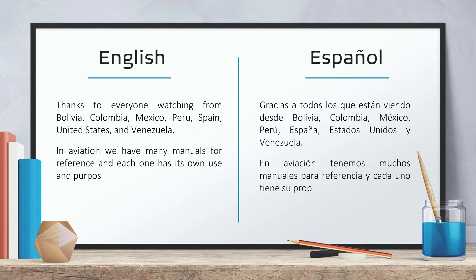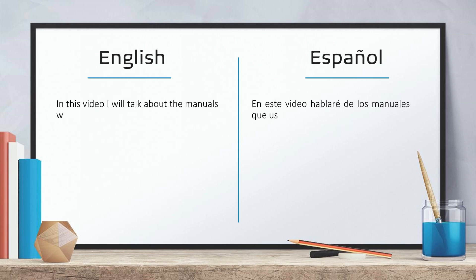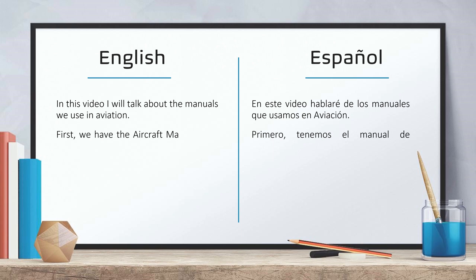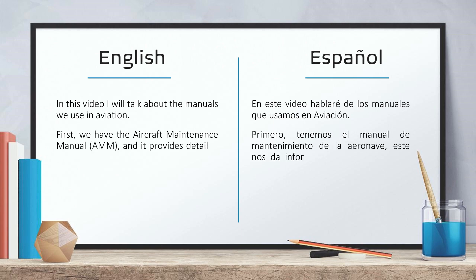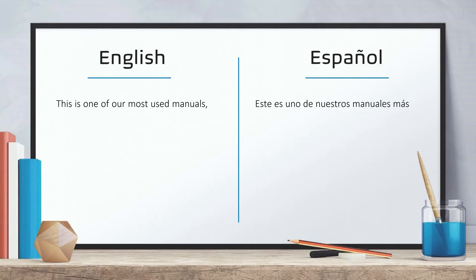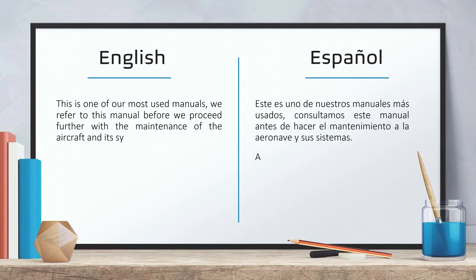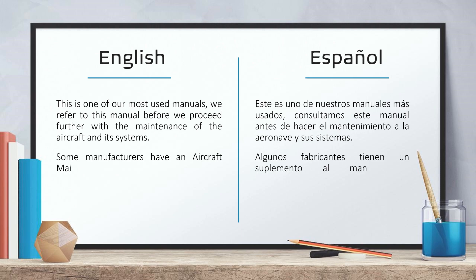In Aviation, we have many manuals for reference and each one has its own use and purpose. In this video, I will talk about the manuals we use in Aviation. First, we have the aircraft maintenance manual and it provides detailed technical information including system description and operation. This is one of our most used manuals.